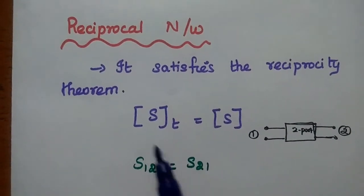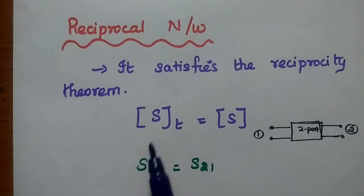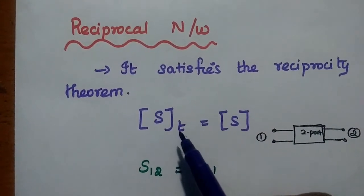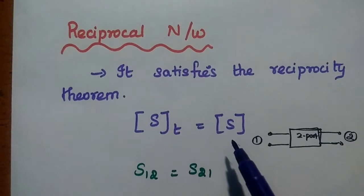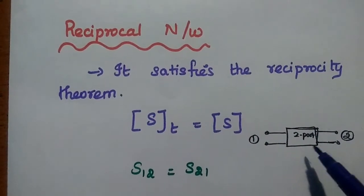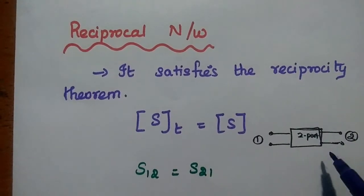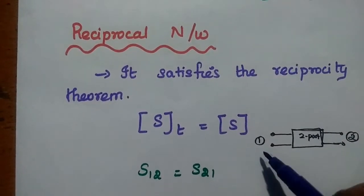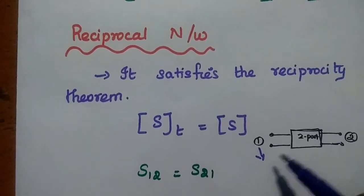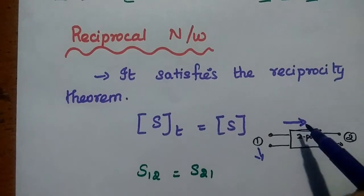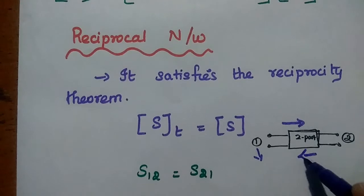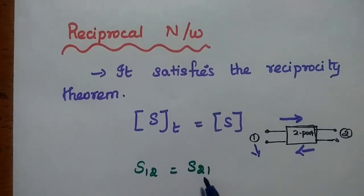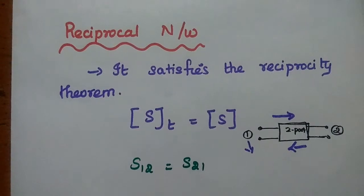The next type is reciprocal networks, which satisfy the reciprocity theorem. The reciprocity theorem states that the transpose of the S-matrix equals the S-matrix itself. For a two-port network, this means either port can be used as input or output — whichever signal is flowing in one direction can be obtained in the opposite direction too. For a reciprocal network, S12 = S21.